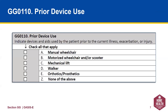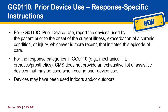Note, going up and down a ramp is not considered going up or down stairs. Here we have a screenshot of GG0110, Prior Device Use. We are looking at what the patient may have used prior to their current situation. The gray box definition tells you to indicate the devices and aids used by the patient prior to the current illness. Note that there are no canes listed here. You would code that under Z, none of the above.